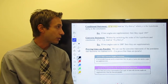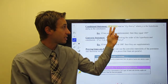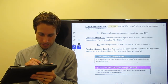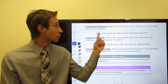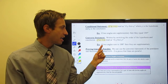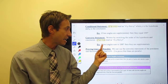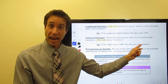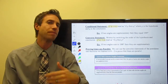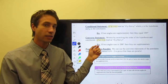The converse is written by switching the hypothesis and conclusion. So the conditional statement is if P, then Q, and the converse would be if Q, then P. A perfect example: if two angles sum to 180 degrees — which was previously the conclusion, now it becomes the hypothesis — then they are supplementary angles. See how they've switched places? That's how a converse statement works.